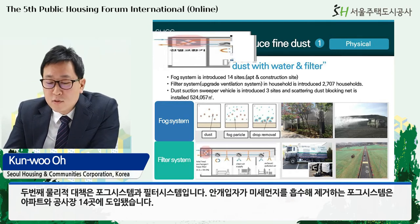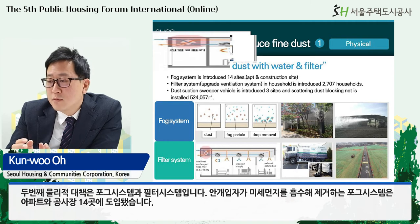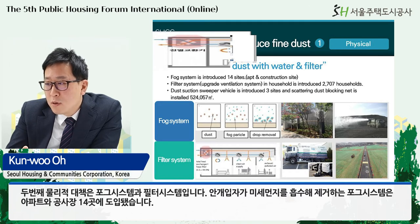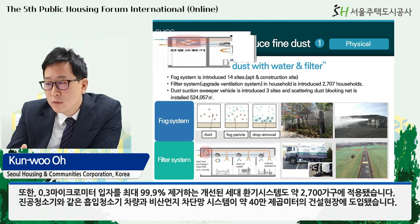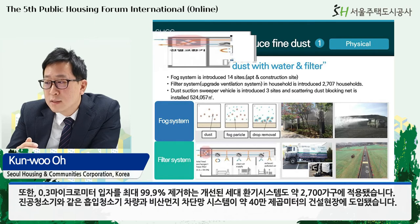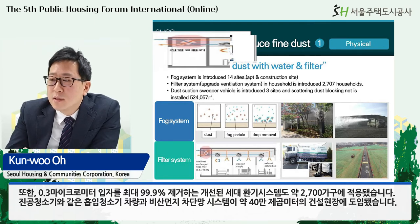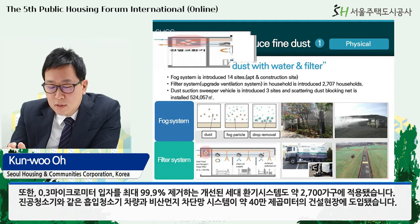The second physical measure is the fog system and filter system. The fog system, in which fog particles absorb and remove fine dust, has been introduced in 14 apartments and construction sites. In addition, an upgraded ventilation system for households that removes up to 99.9% of 0.3-micrometer particles has been introduced in about 200,700 households.